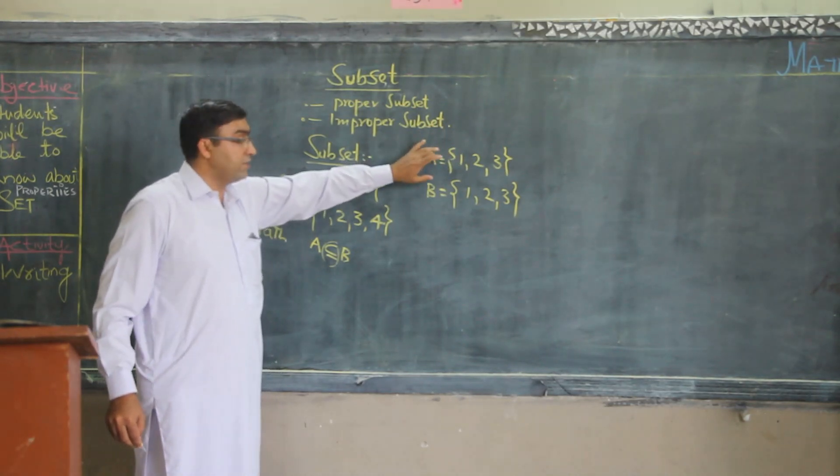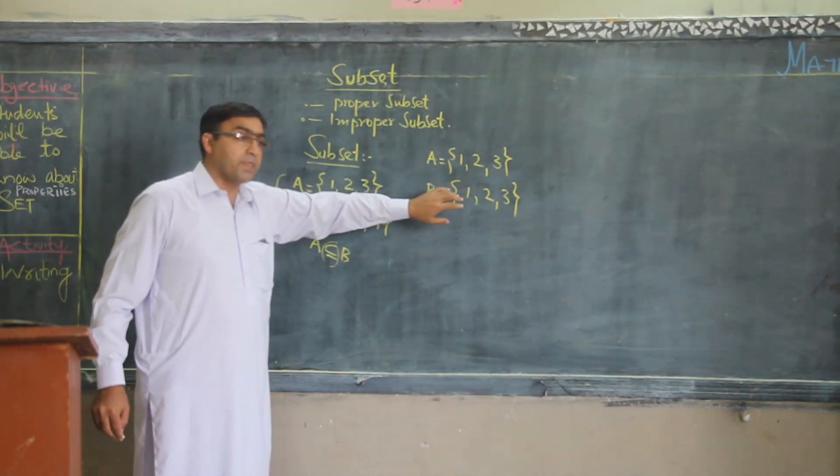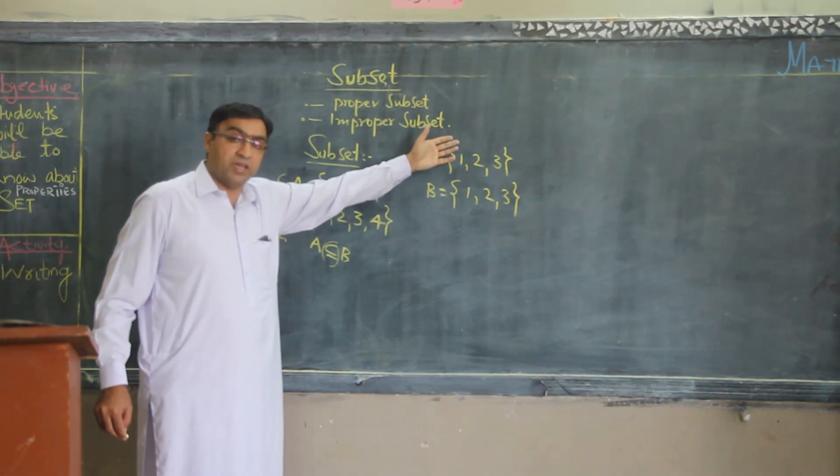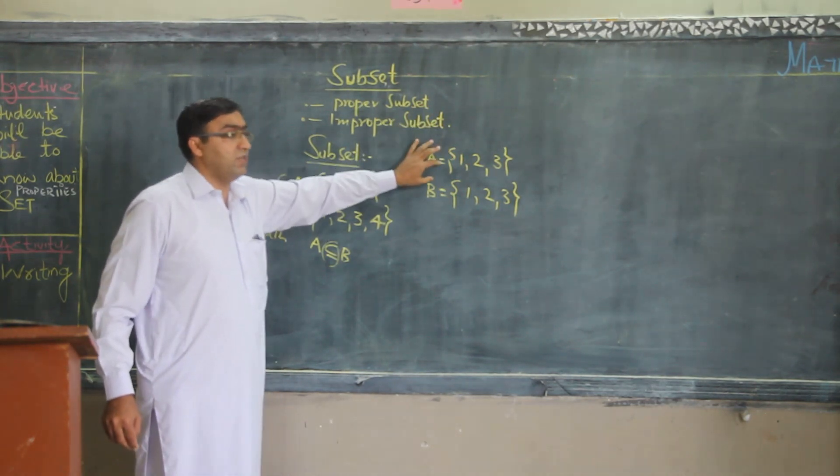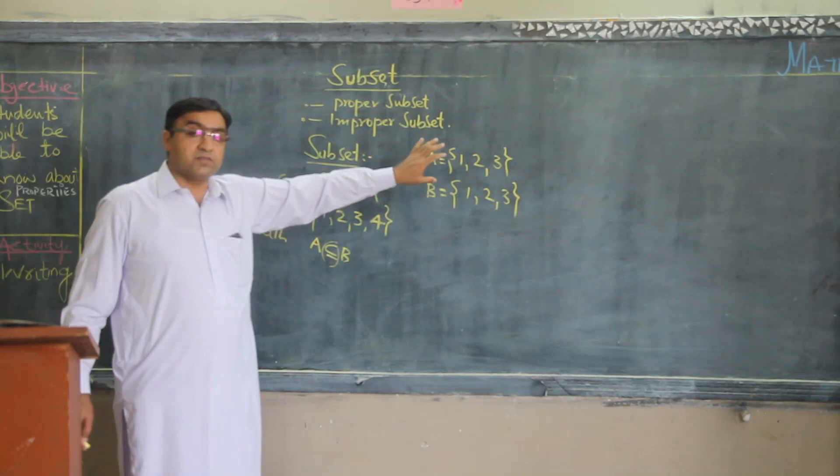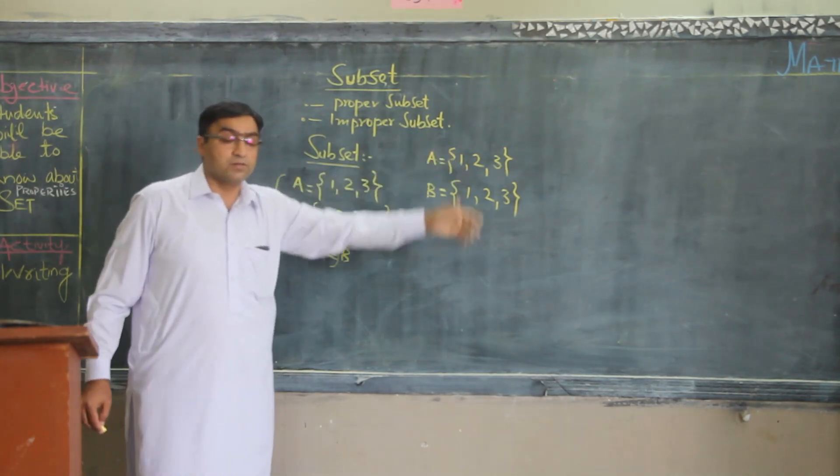So, here A is the subset of B and B is the subset of A. It means we can say that A and B are the subset of each other.